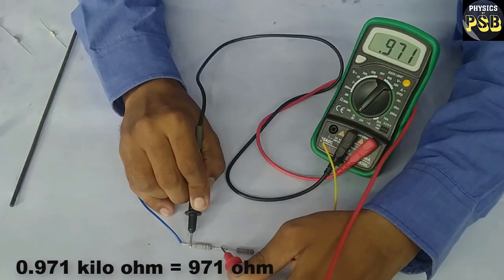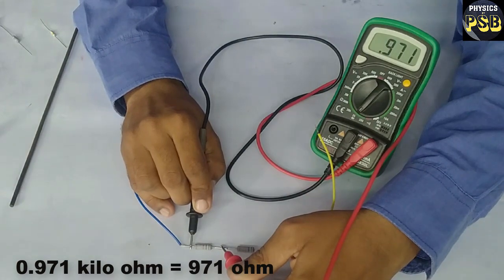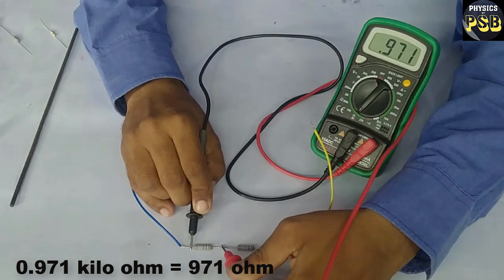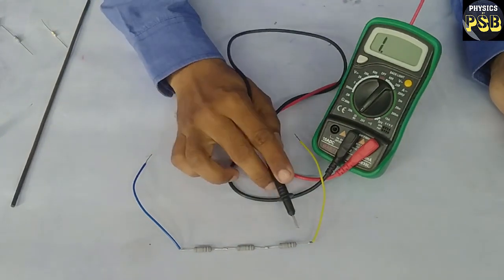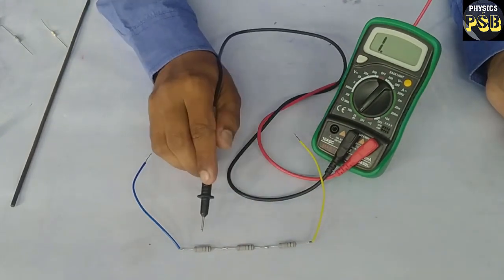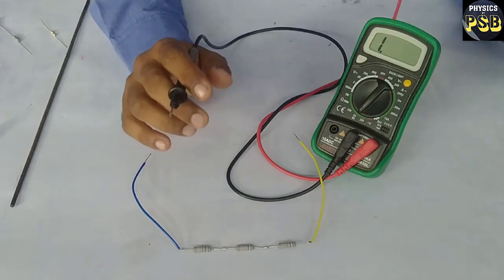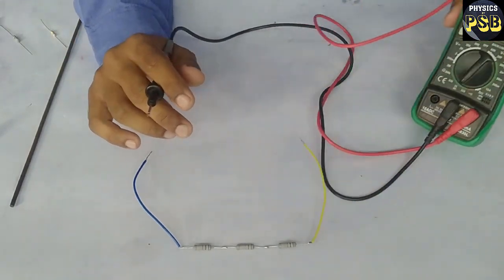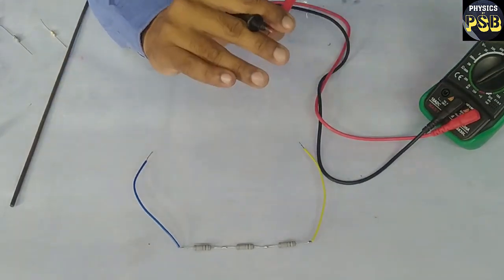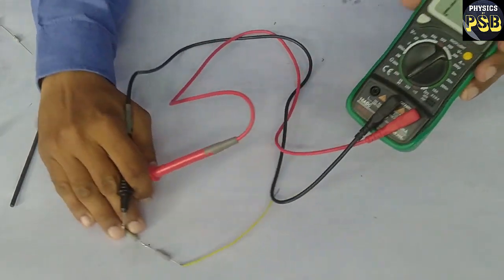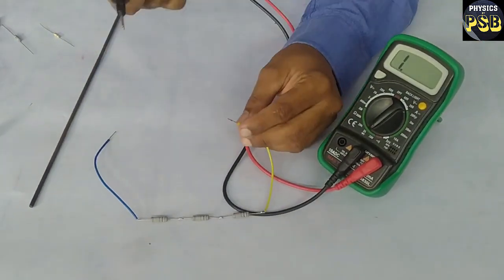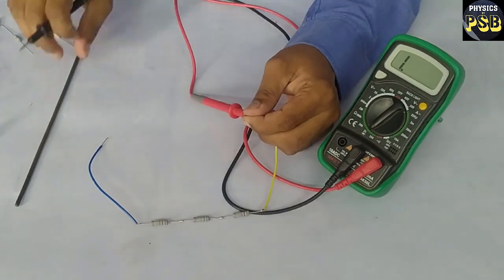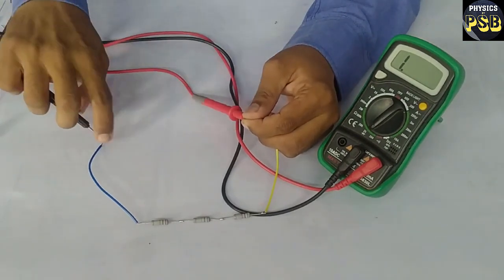It shows that the third one also has resistance around 1000 ohms. Now I have soldered them in this manner. Now they are in series. Let me check the total resistance. I will keep one probe here and another probe is placed here.